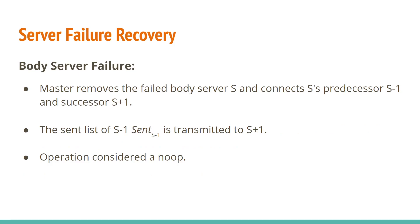The case of a body server failing is more complex and relies on the sent list. When a body server fails, the master will connect its predecessor to its successor by sending each of these servers its new predecessor or successor. If the failed server was processing an update and never forwarded it, then the update propagation invariant would be violated — any successive updates would add on to the current updates and there would be an inconsistency. To circumvent this, the sent list of the predecessor is transmitted to the successor. Because the pending list and the history of the tail were not modified in this operation, it is considered a no-operation and doesn't need to be consistent with the state transitions.